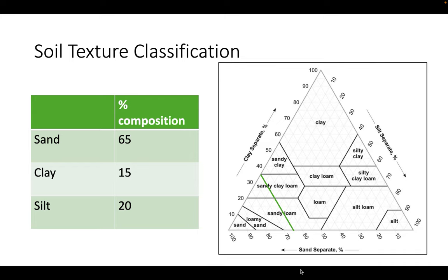Next, we have 15% clay. Find 15% on the left axis and plot the line across the diagram horizontally.